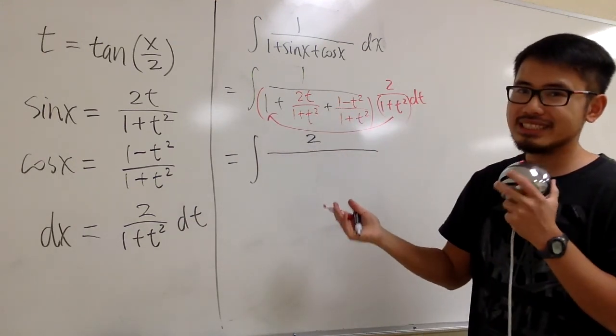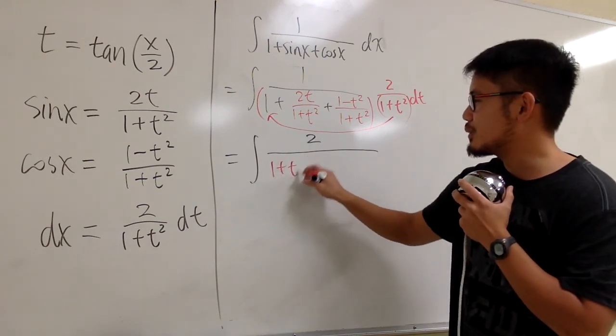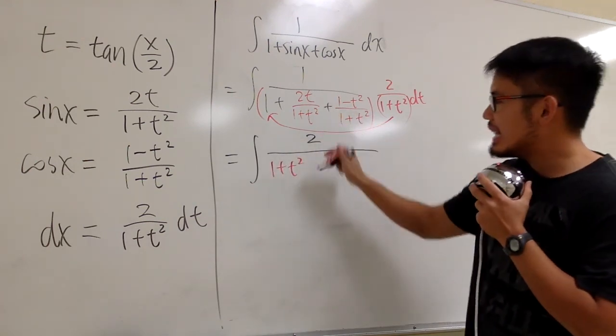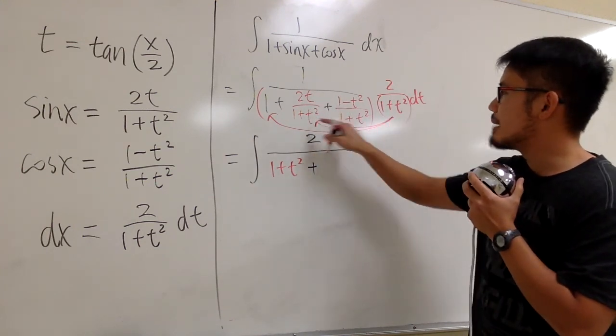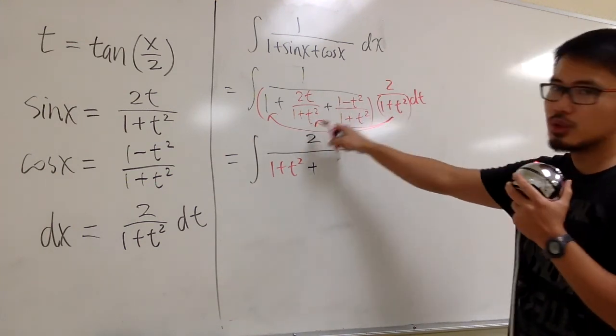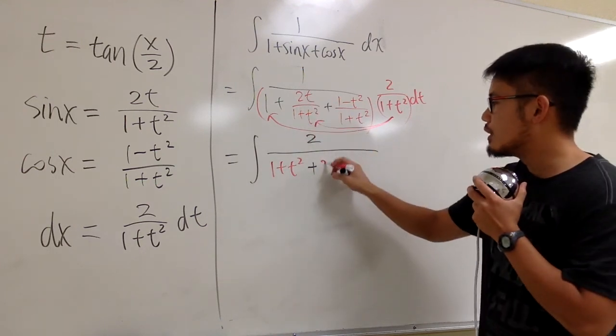We take this, multiply with 1 first, and we just get 1 plus t squared. And then we add it with the second term times that, right? But then 1 plus t squared, they will cancel each other out. We will just have 2t.